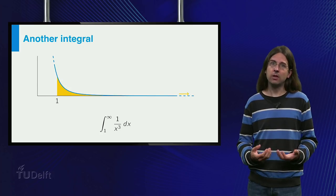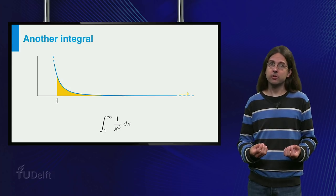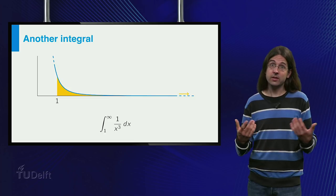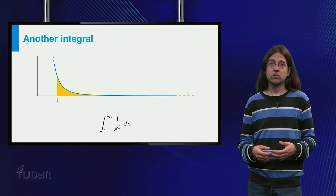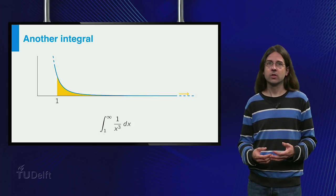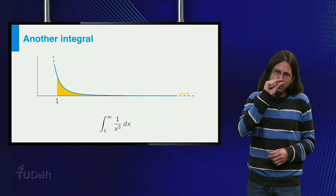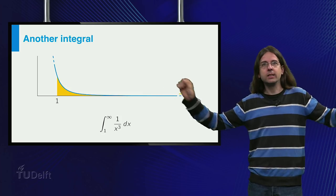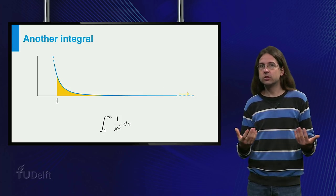Another kind of improper integral arises if one of the limits of the integral is plus or minus infinity. Consider 1 over x cubed from 1 to infinity. The area under the graph is very thin but infinitely wide, and it is unclear what it should be.